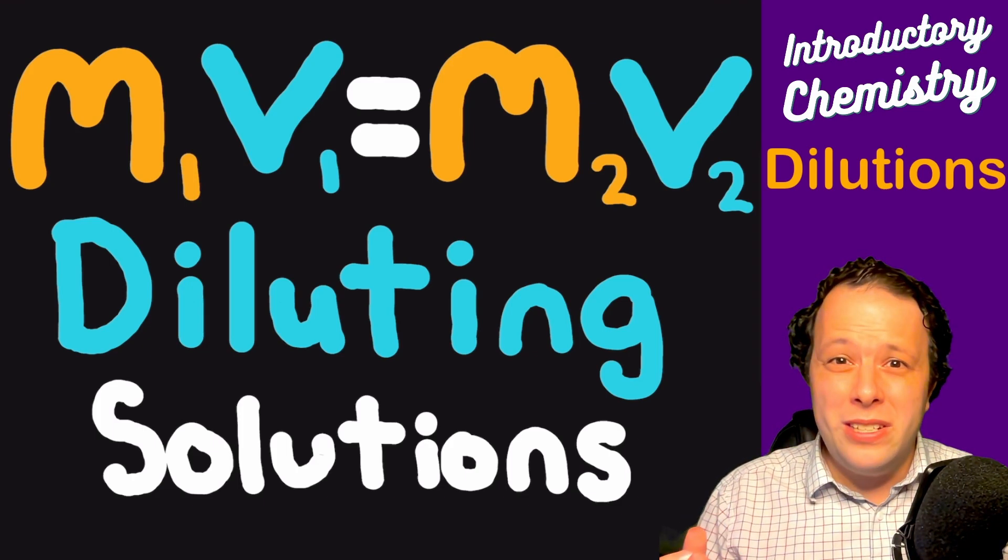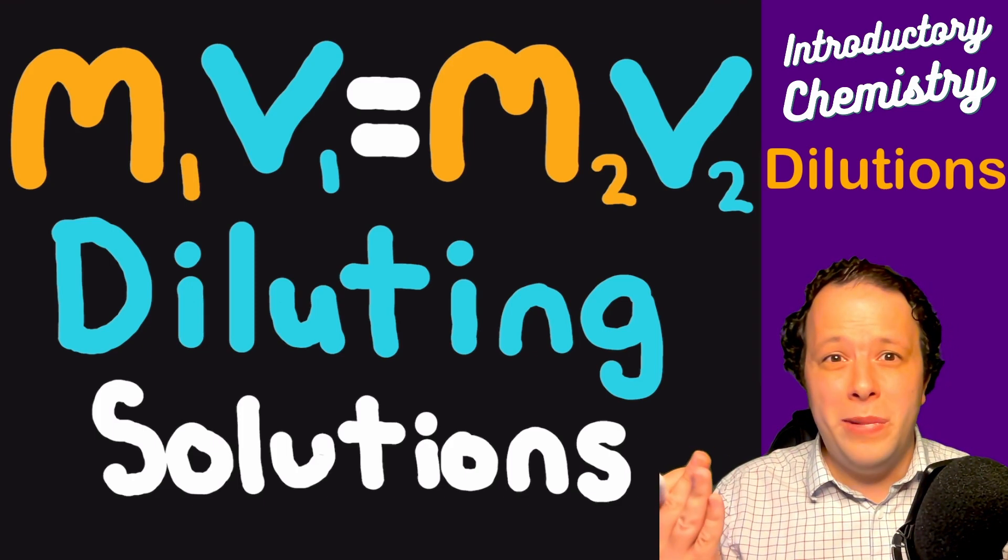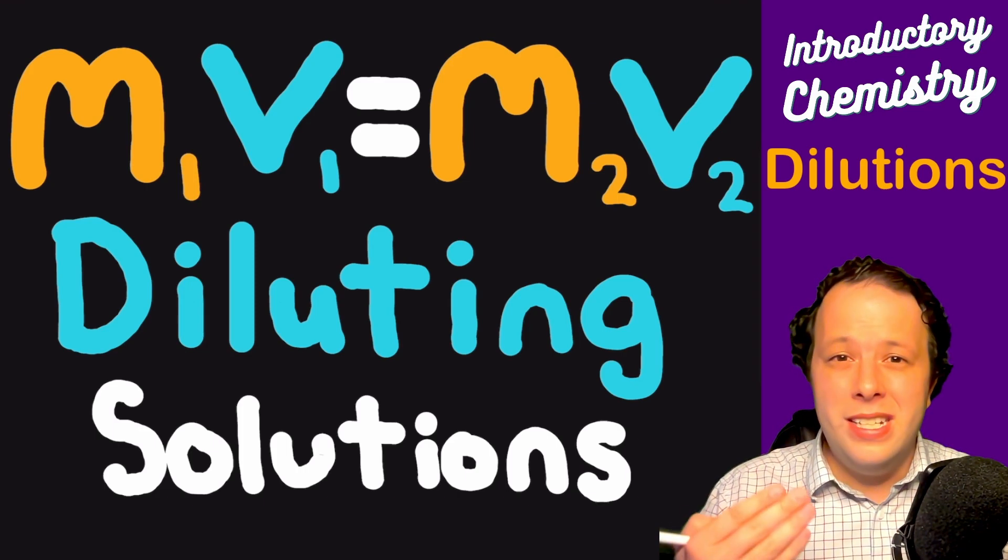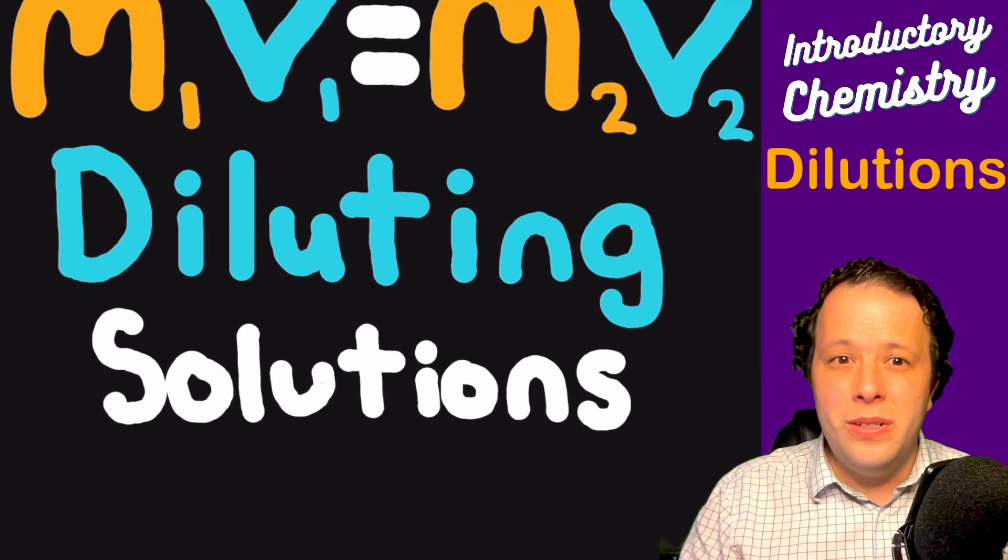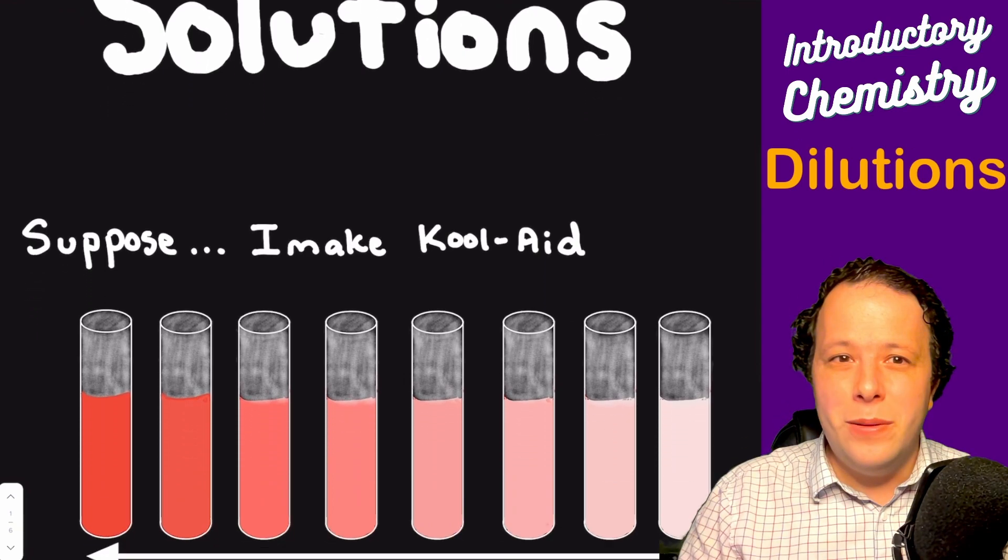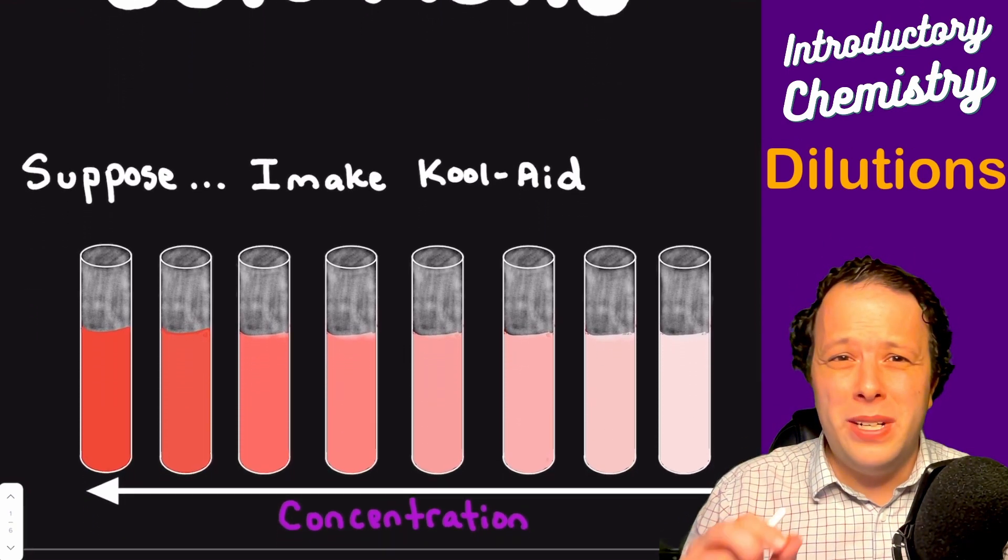We're going to be using the formula above which is M1V1 equals M2V2. So what is that all about? What are we talking about when it comes to dilutions?